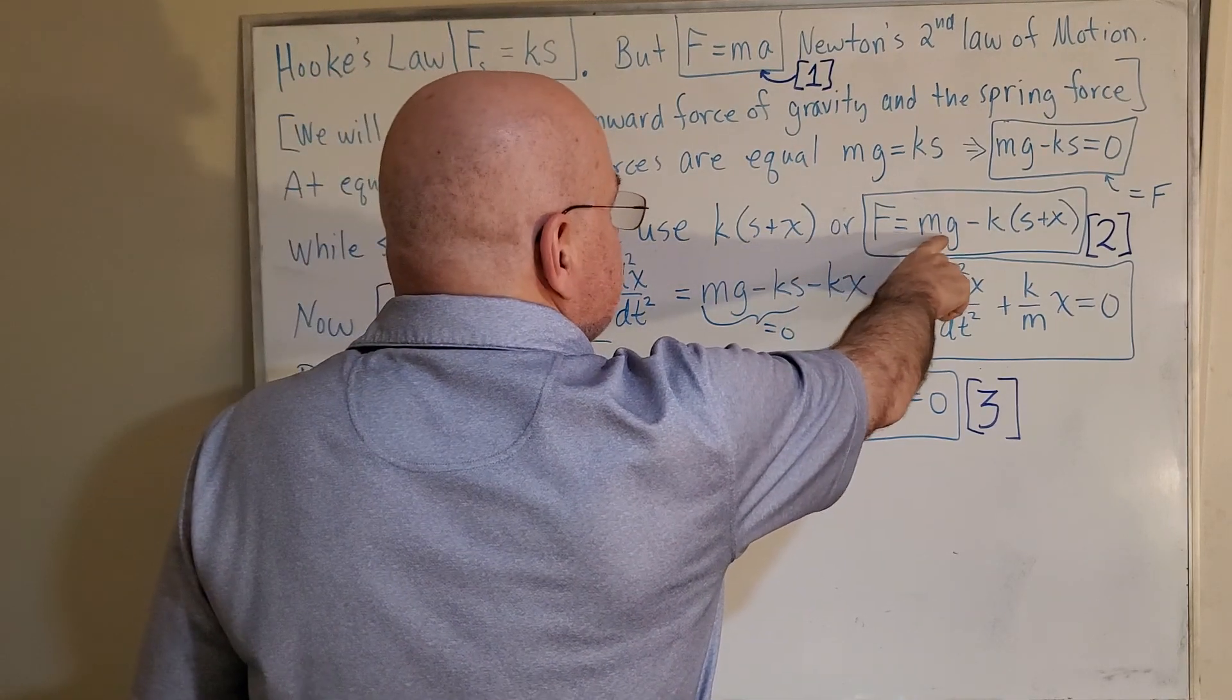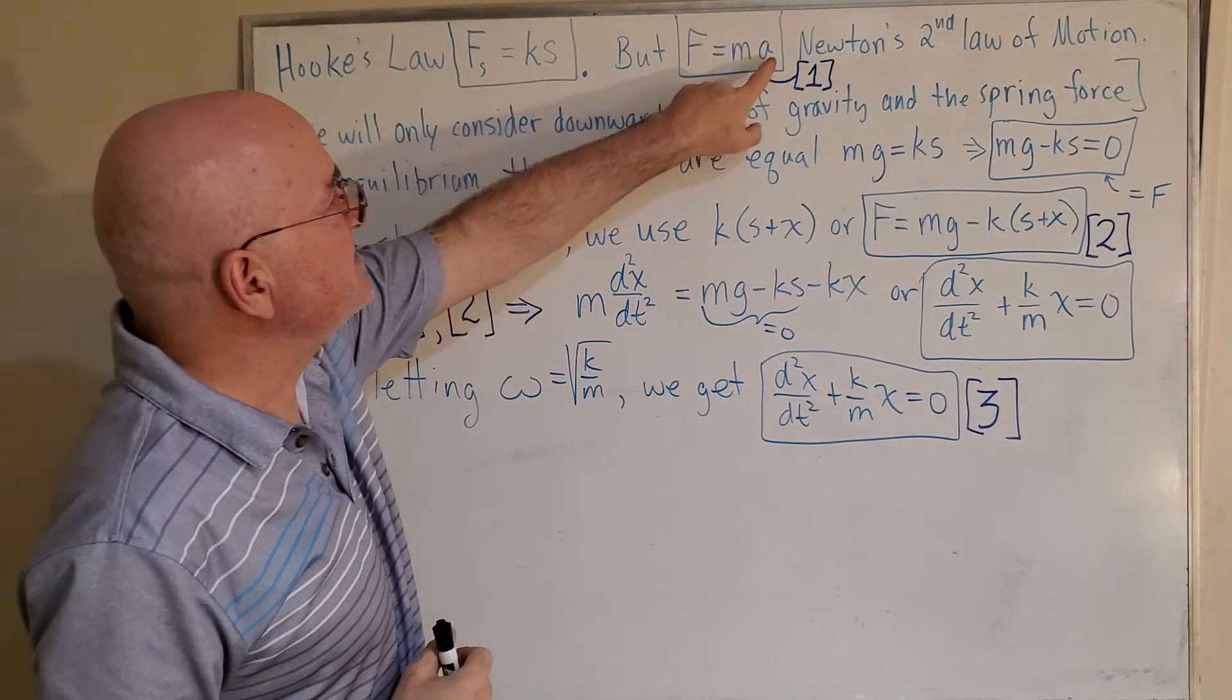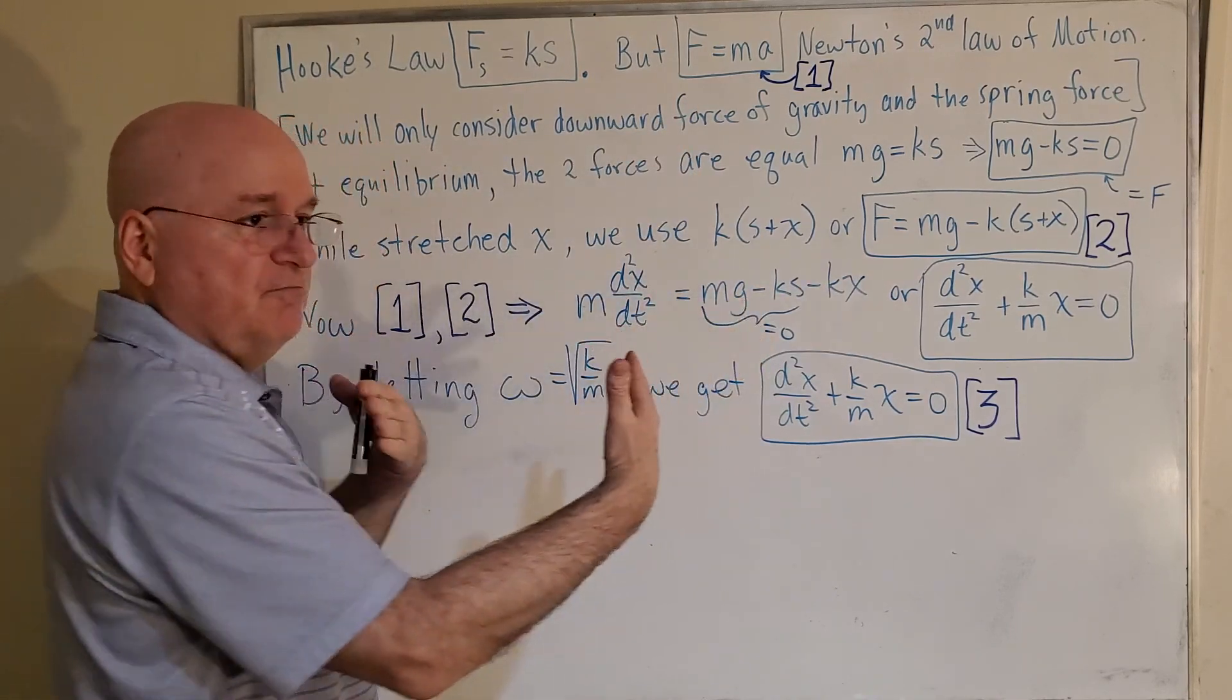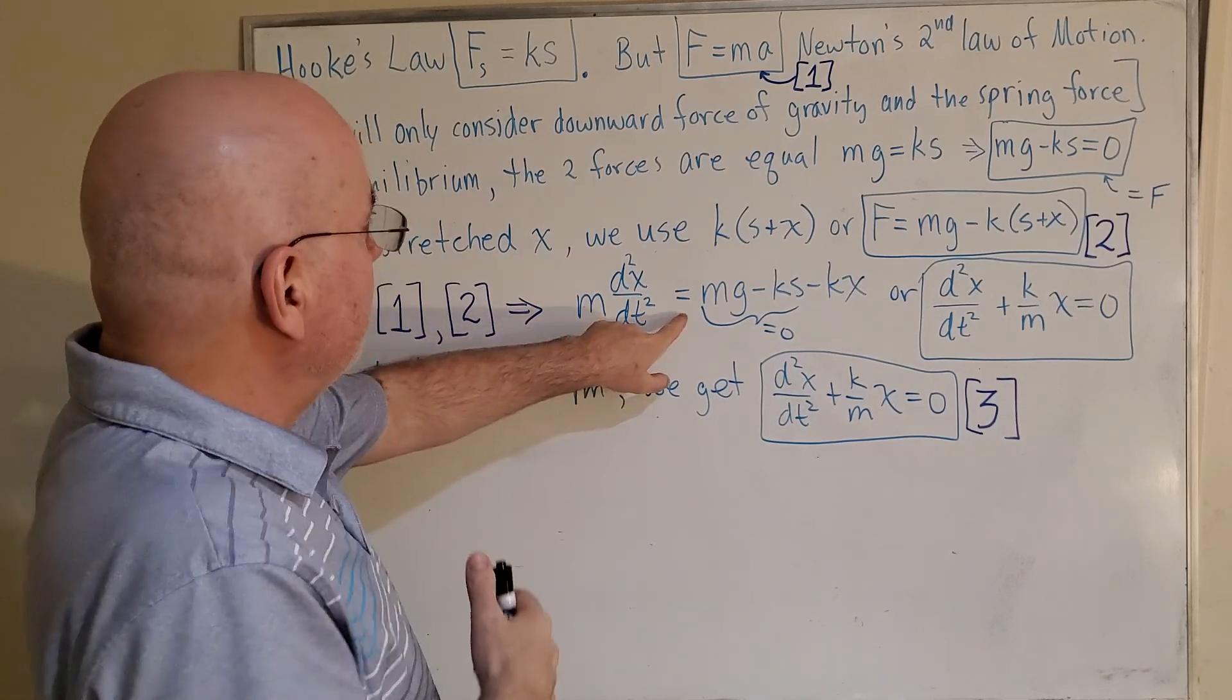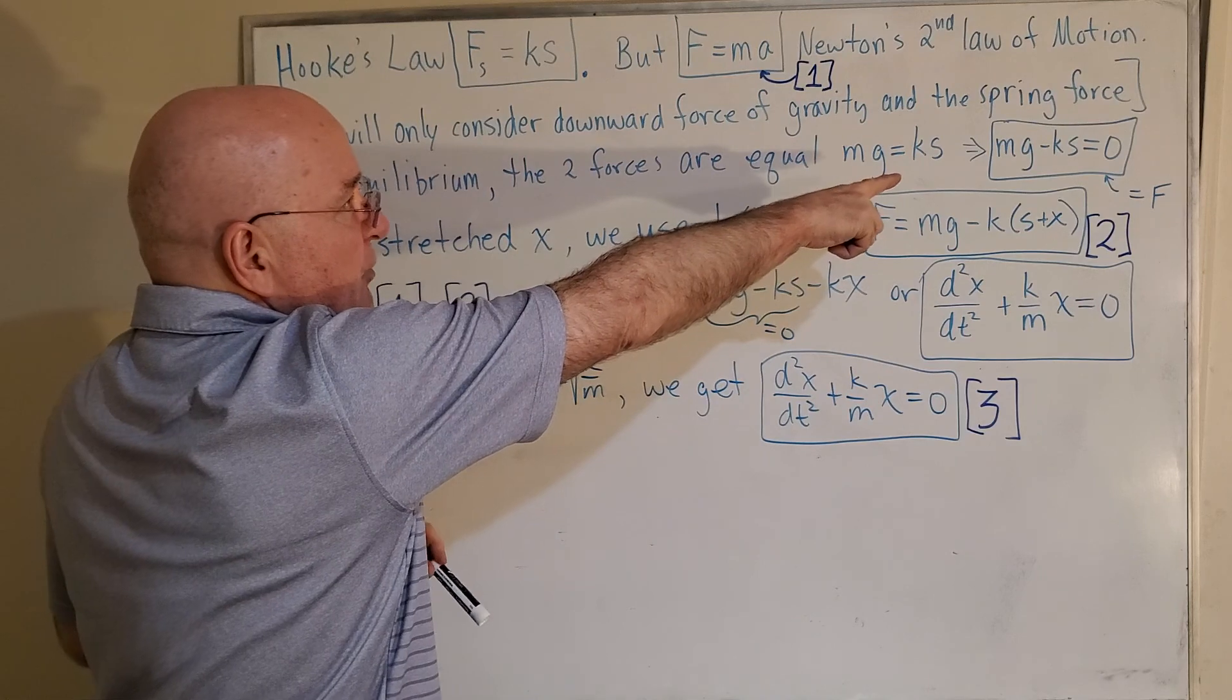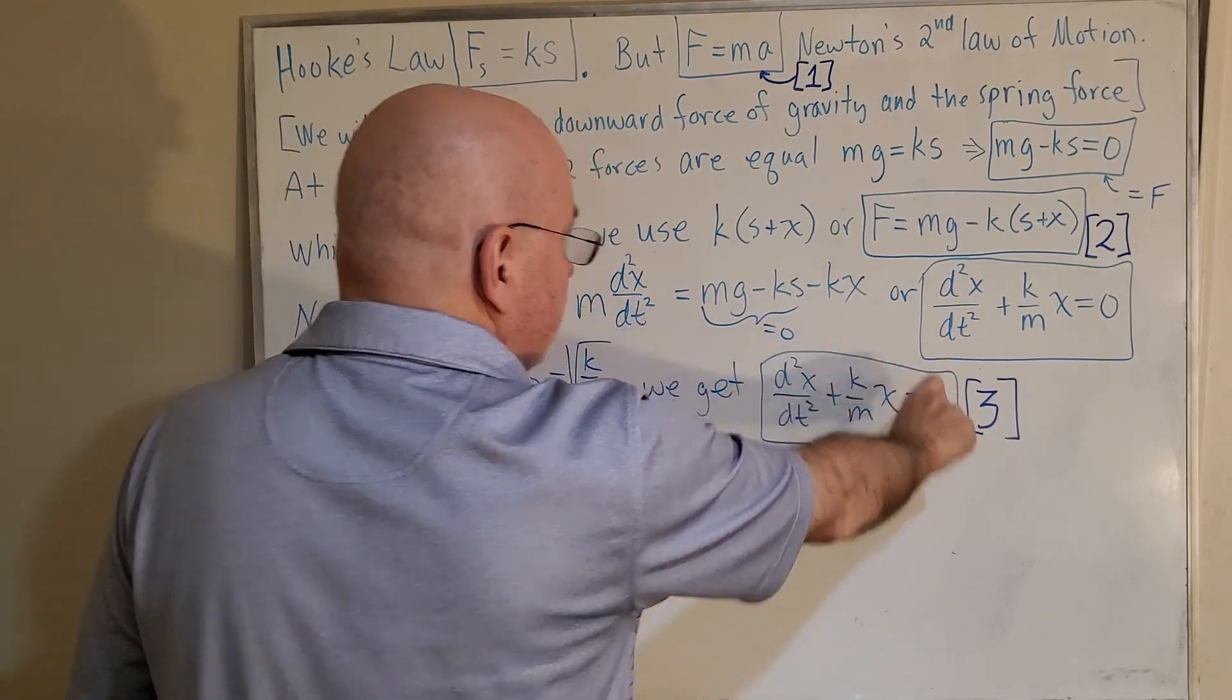So the force, mass times gravity, minus K times this sum. Put equations one and two together, and here's where I'm going to use the second derivative of the position instead of acceleration, right here. This is MA. F is this and F is this. So the two Fs are equal. Left-hand side is MA. Right-hand side is all of this. I just distributed there. But up here, we know that at equilibrium we showed that Mg minus KS is zero. So that goes away. After all that, we get this differential equation.